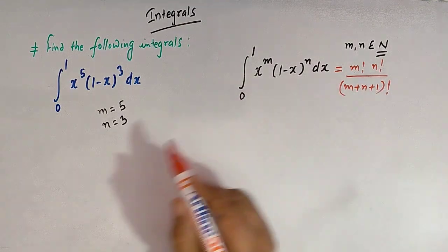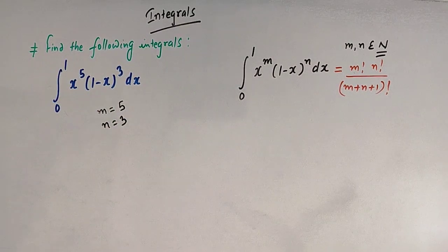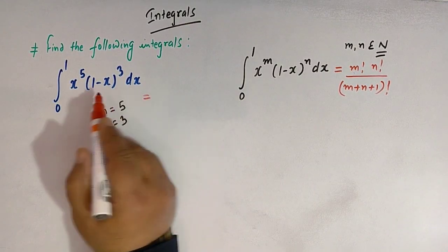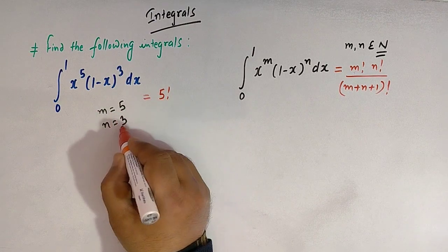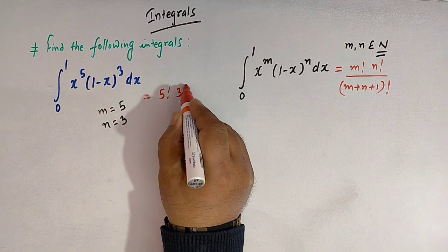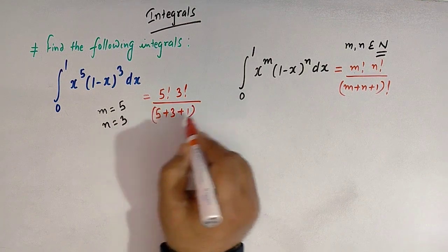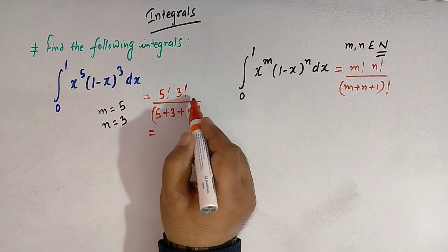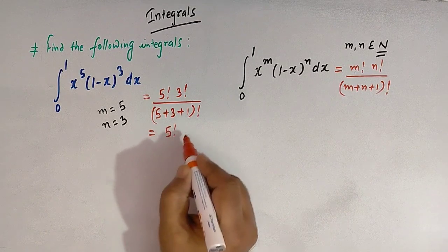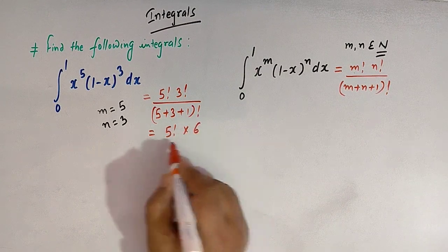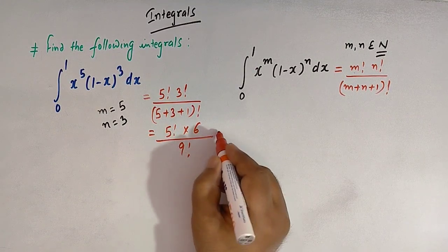Using this result, the value of our integral is 5 factorial — because m is 5 — times 3 factorial, divided by 5 plus 3 plus 1 factorial. That simplifies to 5! times 3! divided by 9 factorial.